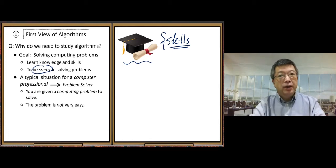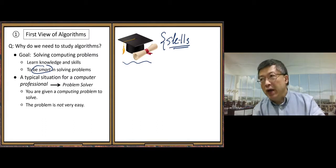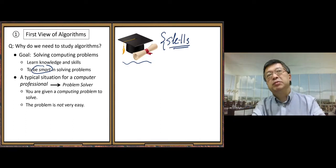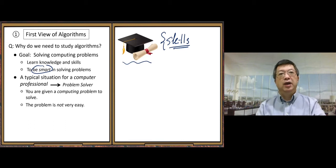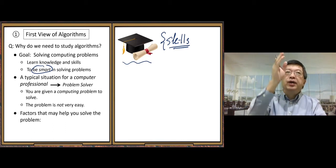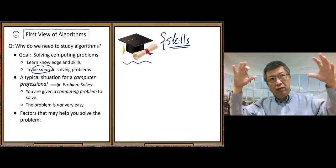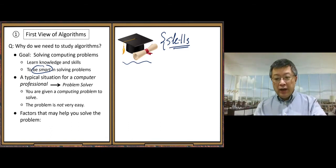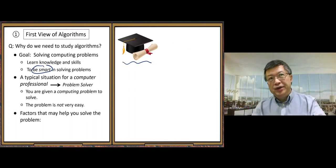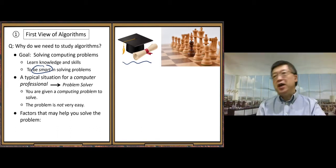But many times, the problem is not very easy. So if it's easy, then it may not be worth much. If it's usually a high value problem, not easy. So you really need to find some good solution for it. So here, I like to look at the factors that may help you solve the problems. The factors. High level, we want to look at the main factors solving computing problem. So here, to see that, first, I want to look at some real world experience. Chess game. Playing chess.